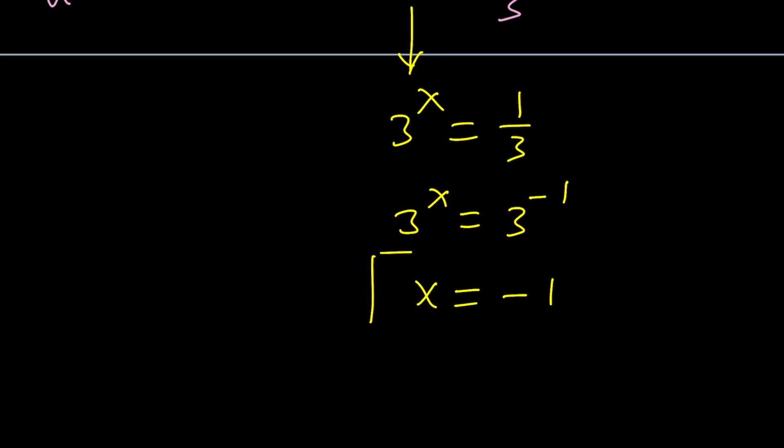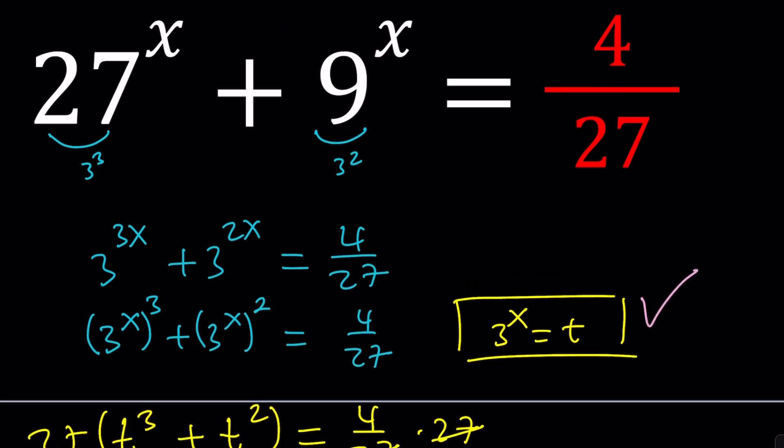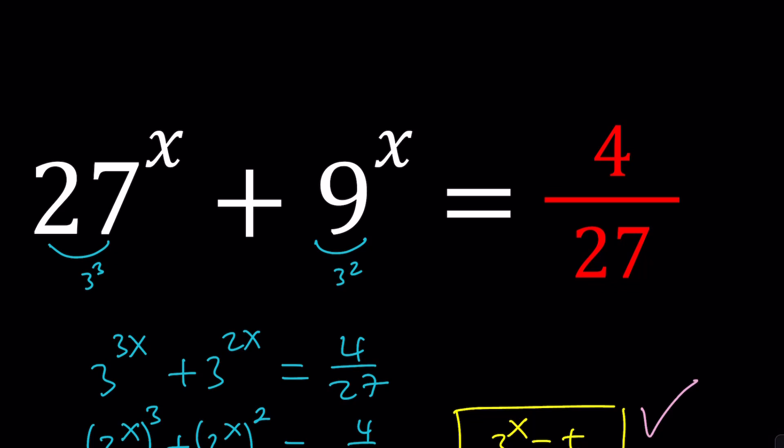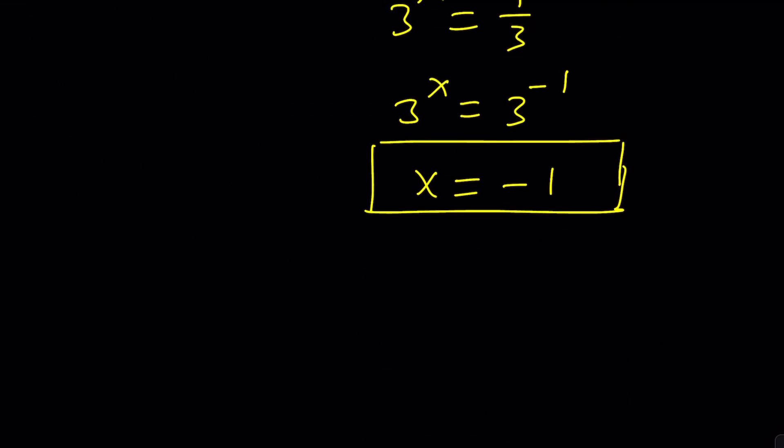What is t? t is 3 to the power x. Let's go ahead and replace t with 3 to the power x. And that's going to give us 3 to the power x equals 1 over 3. At this point, is 1 over 3 a power of 3? Yes, but a negative power because it's a fraction. So how do you write 1 over 3? You can write it as 3 to the power negative 1. And from here, x equals negative 1 will follow.